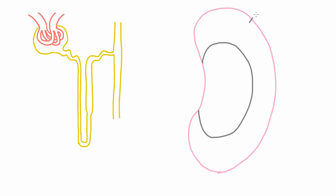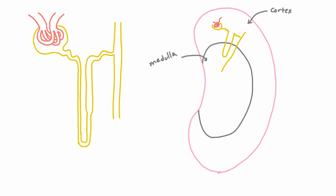So if you remember, there were these two parts of the kidney: the outside, which was the cortex, as well as the inside, which was the medulla. Glomeruli were located out here in the cortex, and then the nephron started up here. You'd have your PCT there, and then the loop of Henle would come down into the medulla. Then you'd have your DCT, and then your collecting duct.